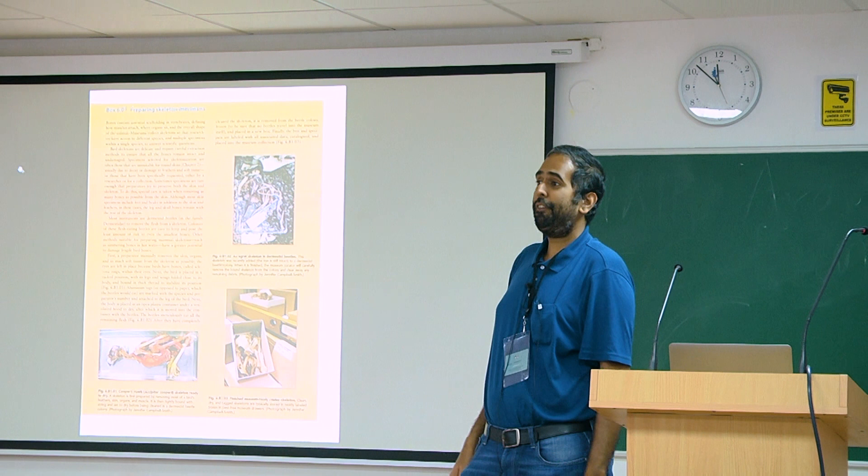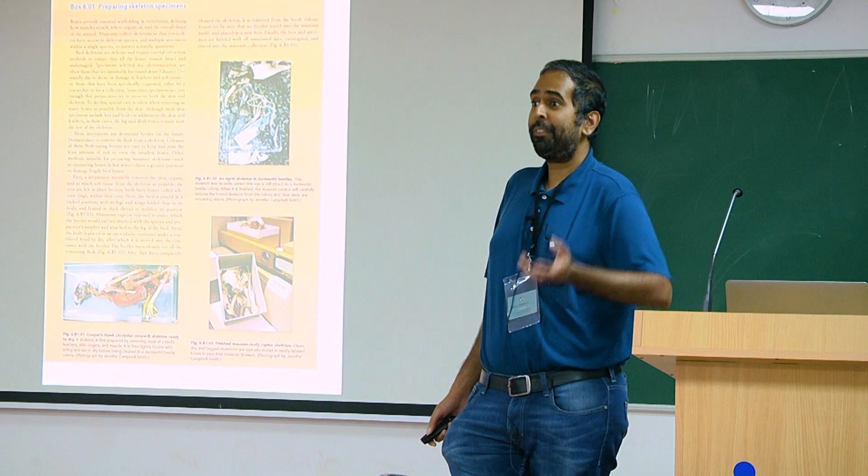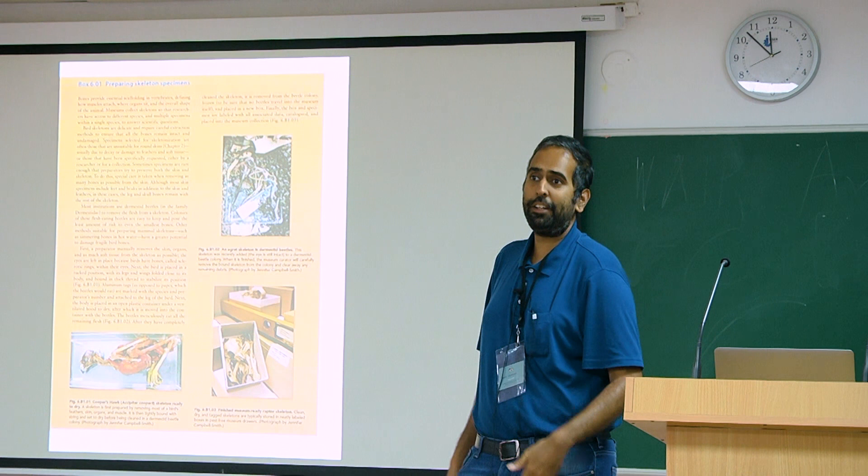The Field Museum in Chicago, for instance, gets road kills all the time or window strikes — birds that hit windows. You don't want to waste that; it's a valuable source of anatomical information. So you take these birds, prepare them, put them in with the dermestids, let them clean off the skeleton, and then add it to your collection.